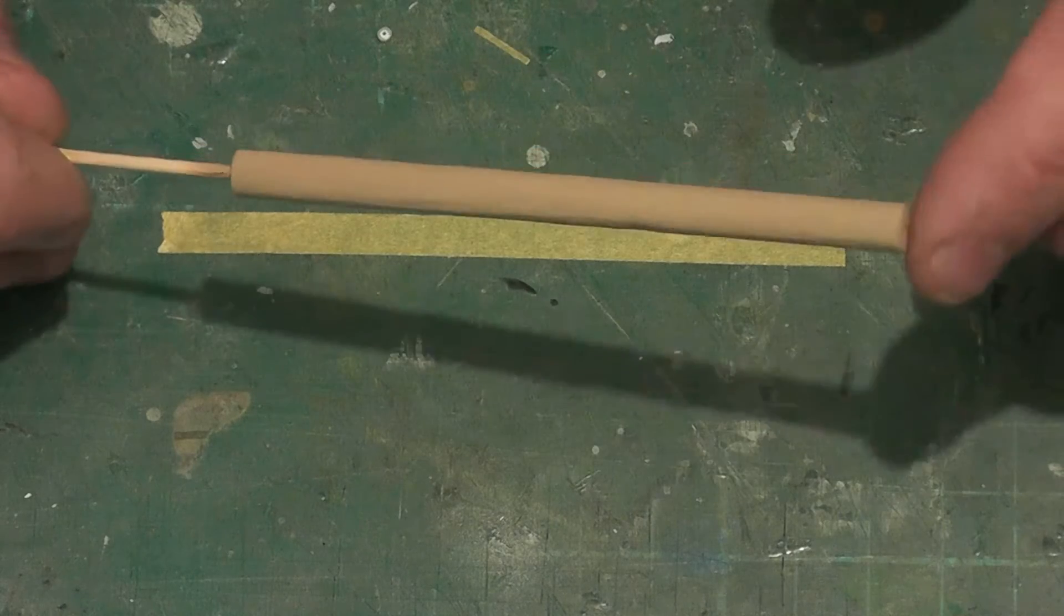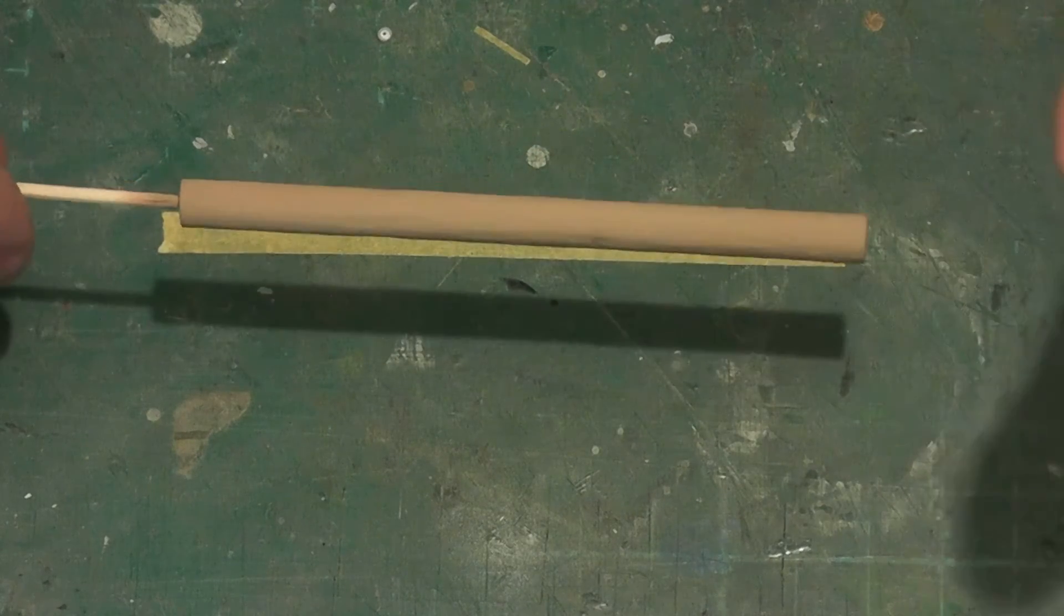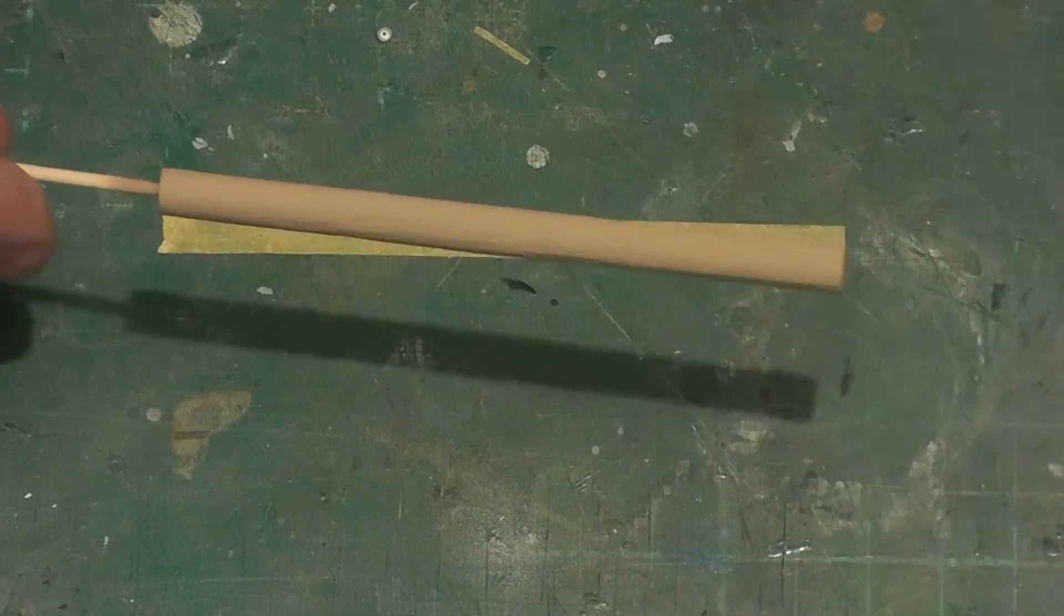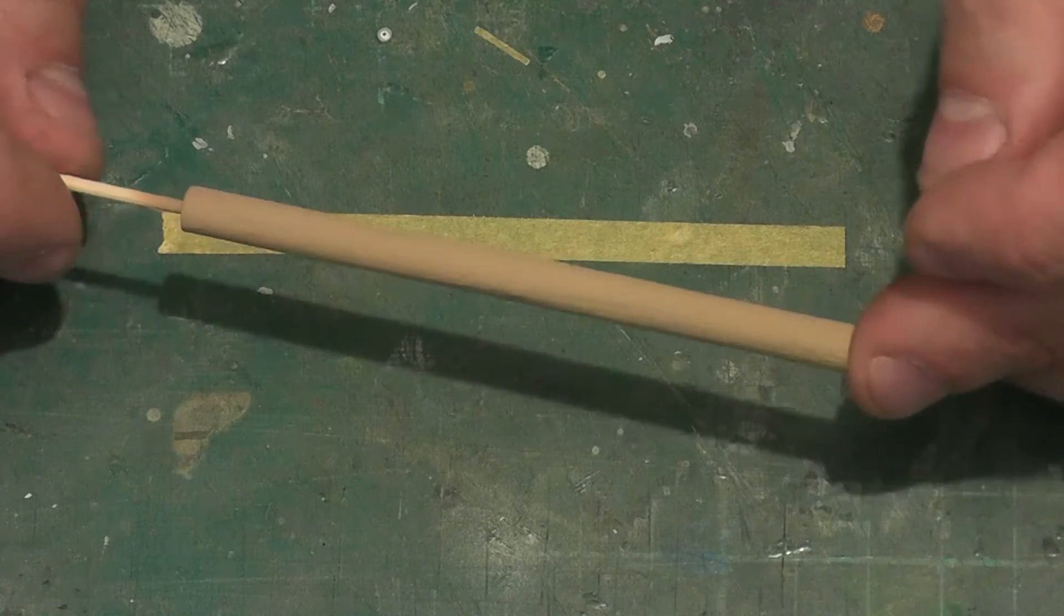So what you want for this is you want your base coat to be very flat. It's important that it's very flat, because what you want is the following coats of oils to actually bind to it quite well.